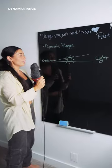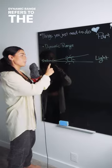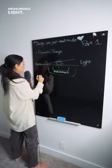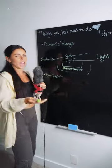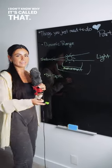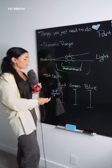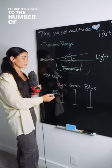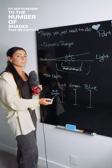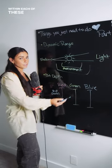Dynamic range refers to the minimum and the maximum measurable light. Bit depth — I don't know why it's called that — refers to the number of shades that we capture within each of these colors.